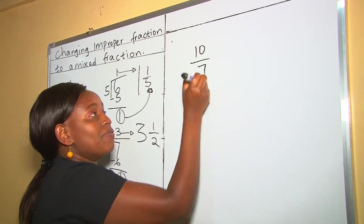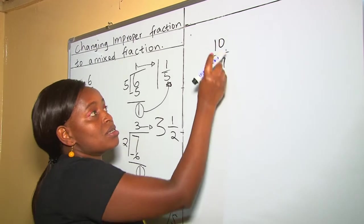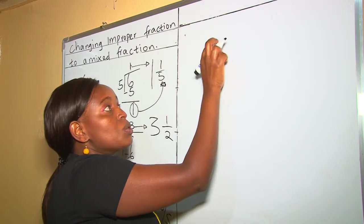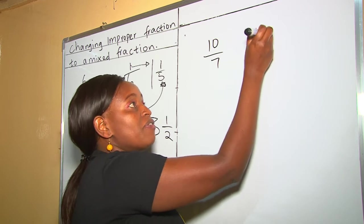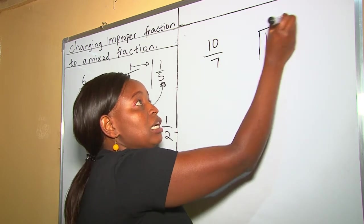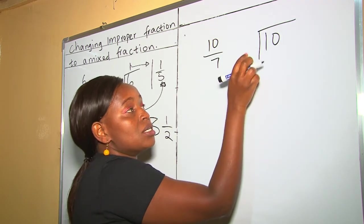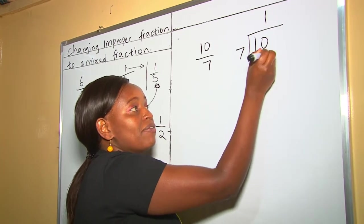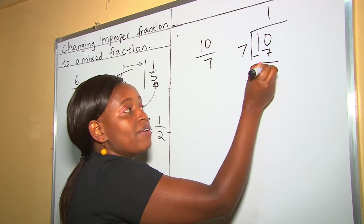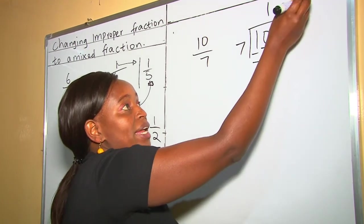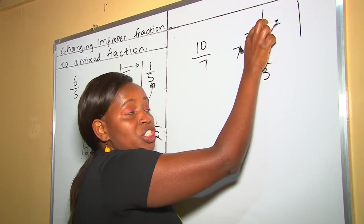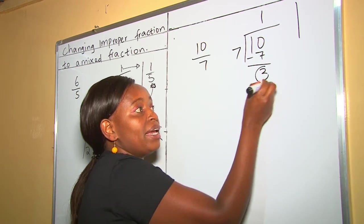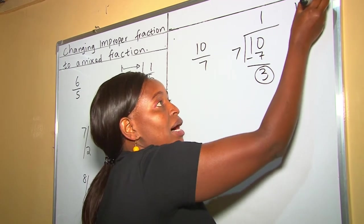10 out of 7. As you can see, this is an improper fraction. Our numerator is our dividend and our denominator is our divisor. 10 divided by 7 is 1 because of 7. 10 take away 7 is 3. This 1 is our whole number. Our quotient takes up the whole number part, and our remainder becomes our fraction.